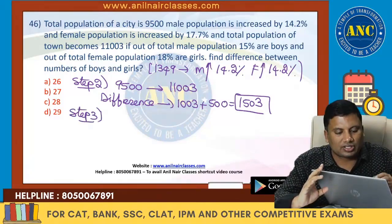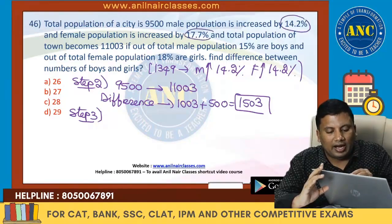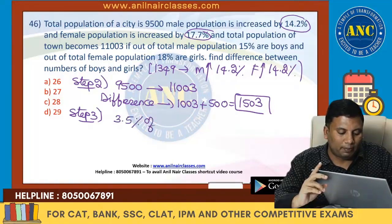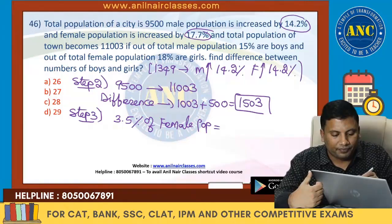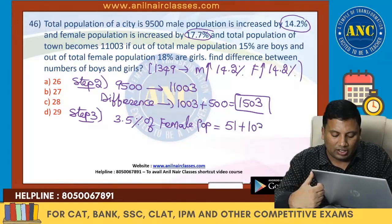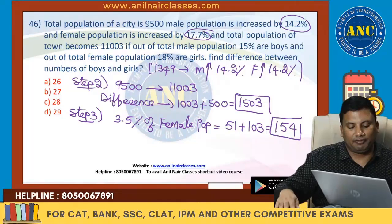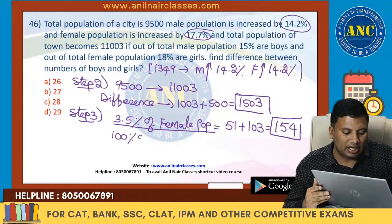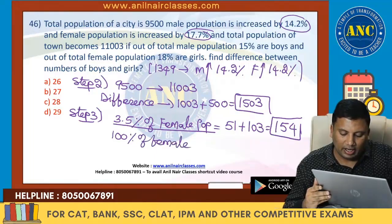That extra 154 came from the difference between 17.7% and 14.2%, which is 3.5% of female population. So 3.5% of female population equals 154. Therefore 35% of female population equals 1,540, and 100% — the total female population — equals 4,400. Wait, recalculating: 3.5% × P = 154, so P = 154 × 100 / 3.5 = 4,400.